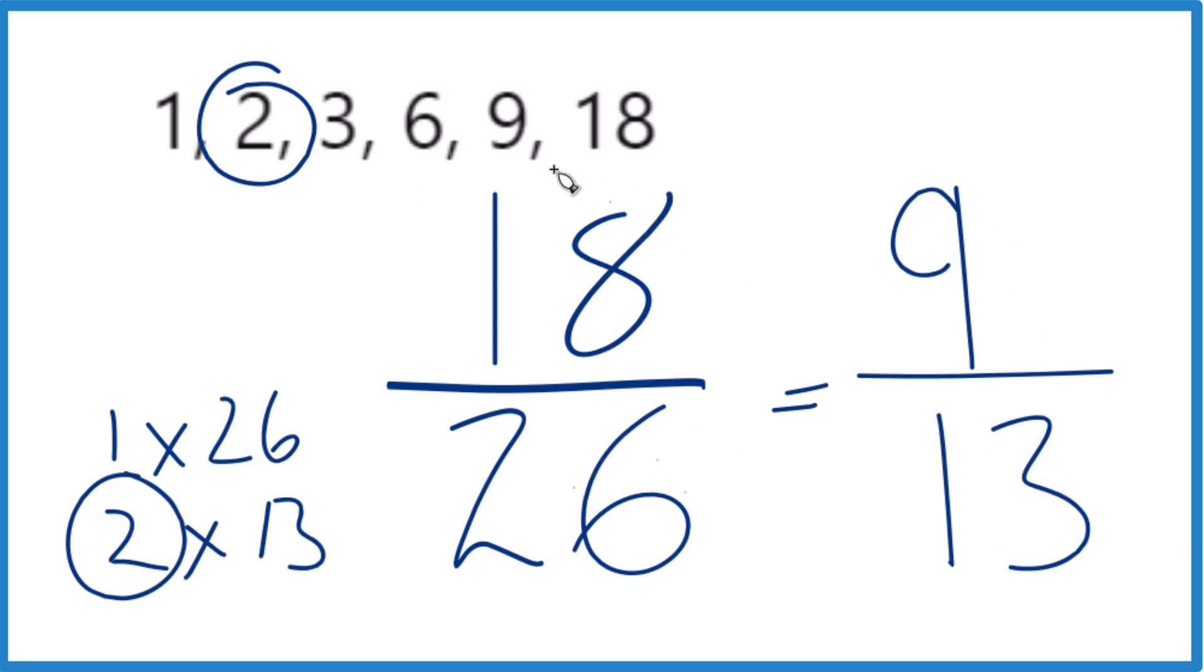Since these are both even numbers, you could have just divided each by two to start out with. You would have gotten nine thirteenths. Sometimes that's a good strategy as well.